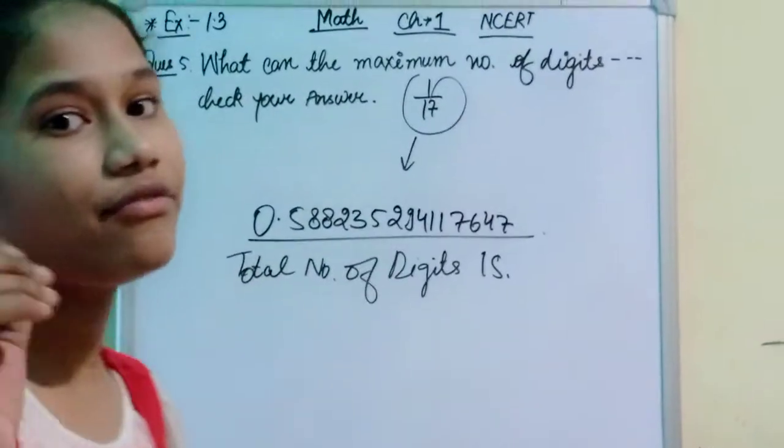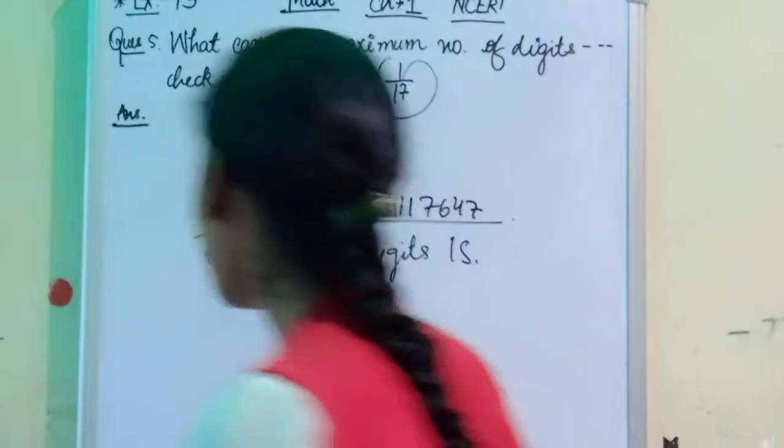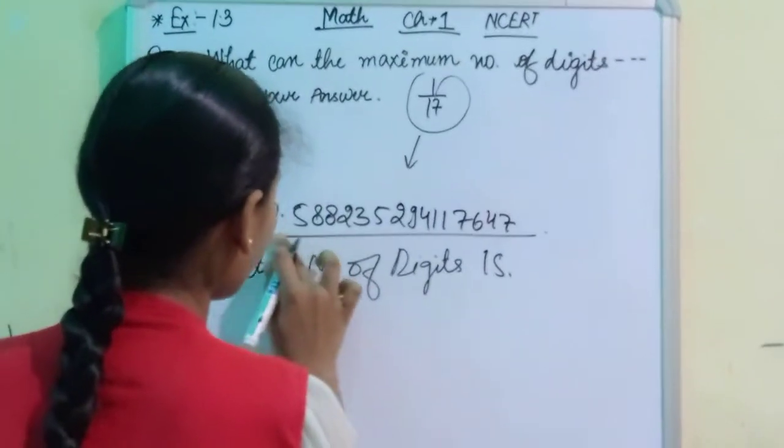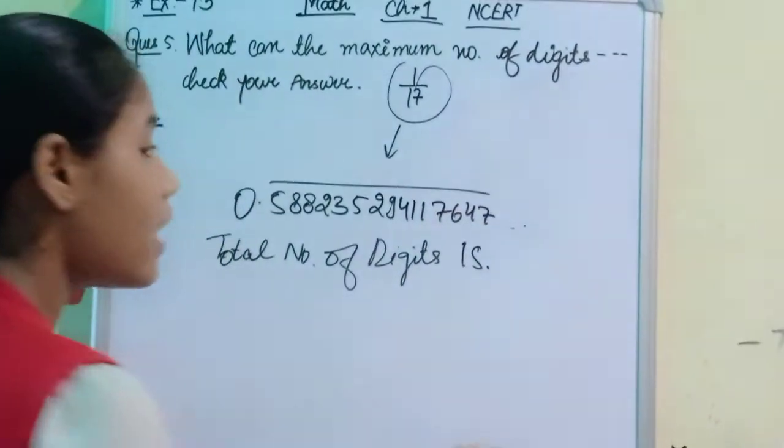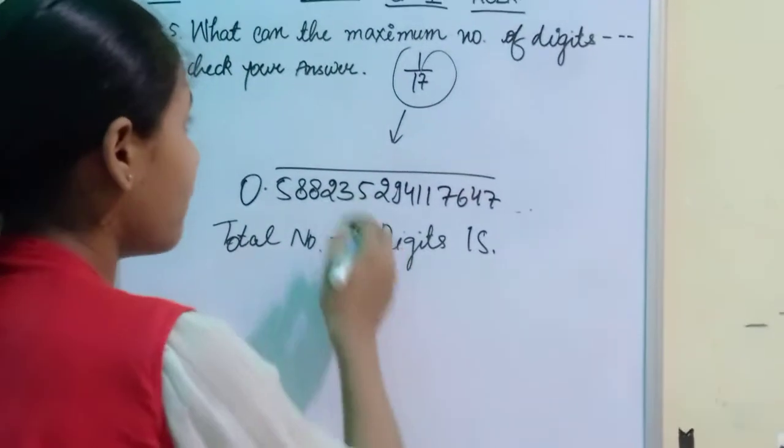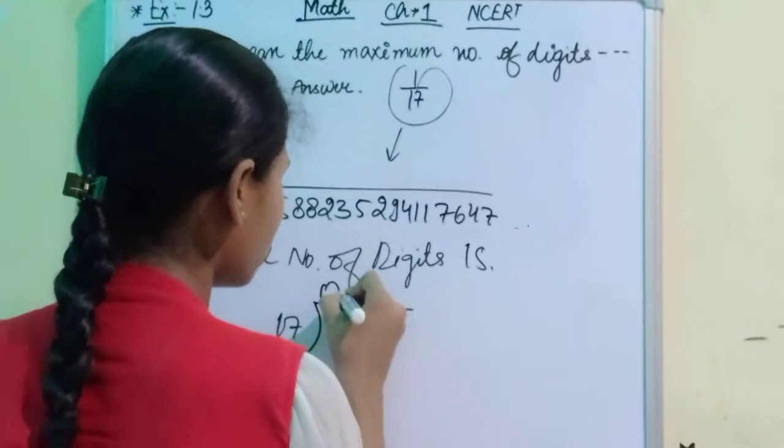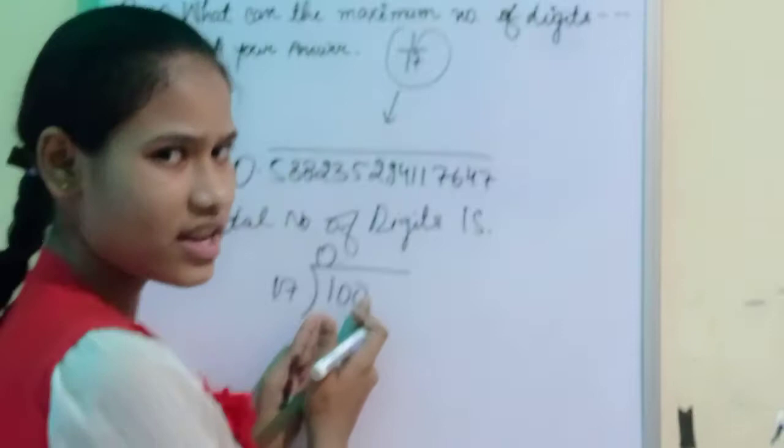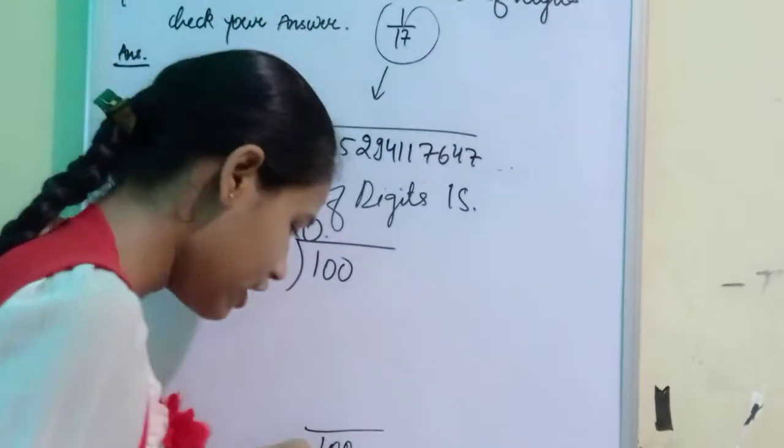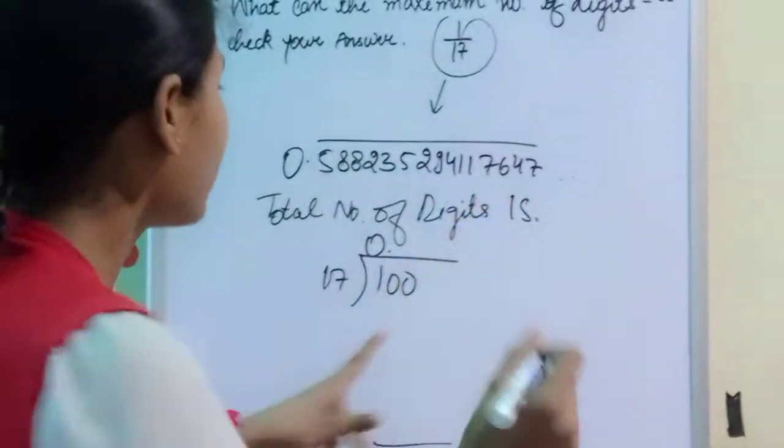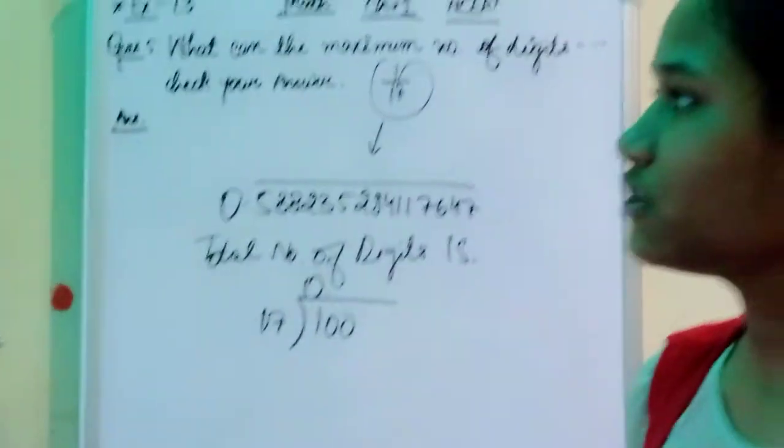We are getting 15 as our total number of digits. And if we write the answer, we will not put a line, we will put a bar over here. Because when I'm dividing, I write 1 and 17 like this, I add zeros, and this is the quotient I'm forming. In the remainder, I'm again forming 100, which means the same process will divide again. That's why I put a bar over here. So this is the correct answer.